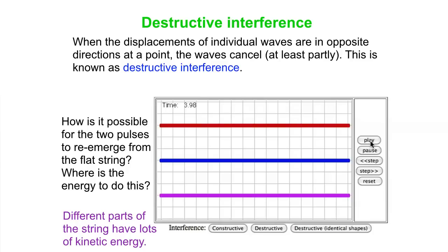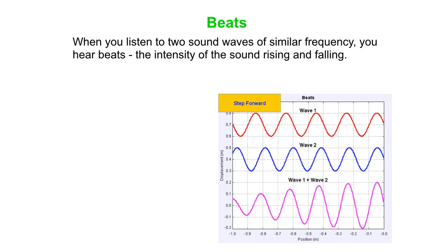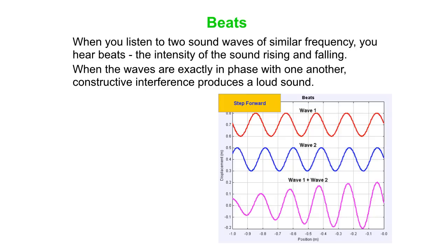Now let's talk about beats. If you listen to two sound waves at a similar frequency, you actually hear beats. Guitar players can use this to tune their guitar. The intensity of the sound rises and falls. If the waves are exactly in phase with one another — one peak lines up with a peak of another wave — you get constructive interference producing a loud sound.